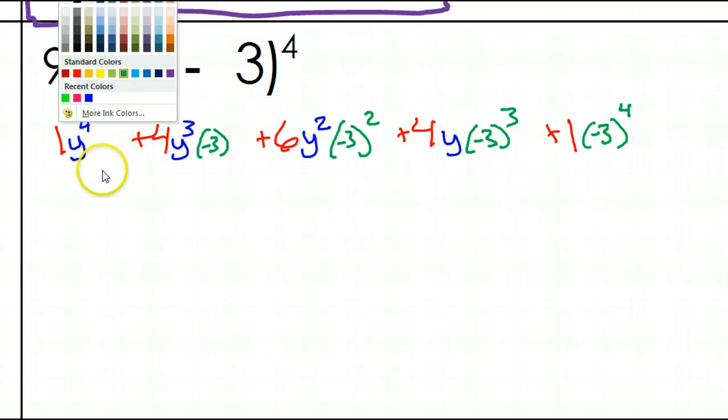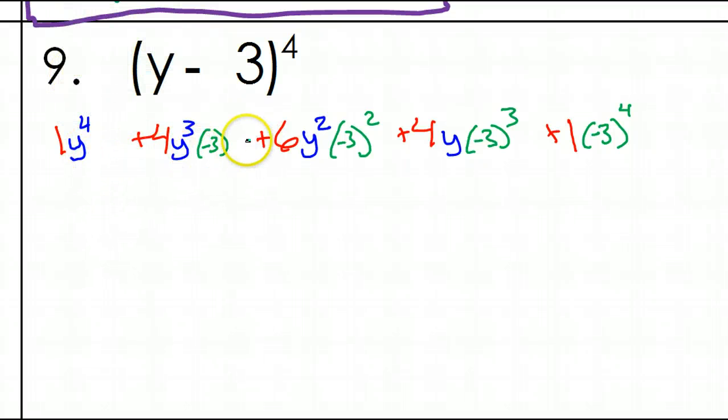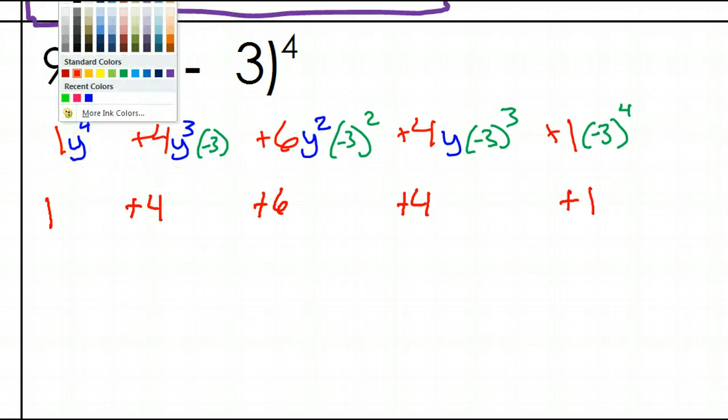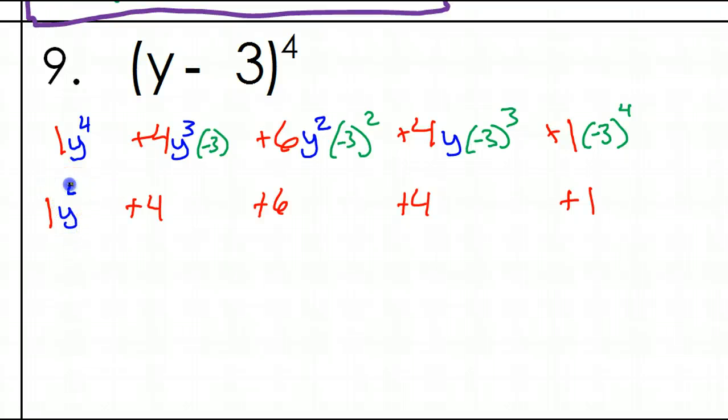What are we going to do now? So, I always recommend simplifying the powers first. If there's anything to do. So, in this case, I'm talking about these negative threes to these powers. Negative three squared. Negative three to the third power. And so on. So, let's do that next. Everything else, we're just going to keep it the same. So, we still have, we have one, four, six, four, one. And the variable part is staying the same, too. We have y to the fourth power, y to the third power, y squared, and y.